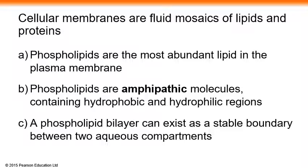Cellular membranes are fluid mosaics of lipids and proteins. Phospholipids are the most abundant lipids in the plasma membrane, and the structure of phospholipids was already discussed in a previous chapter. Phospholipids are amphipathic molecules — 'amphi' means two-way — so one side is hydrophilic and the other side is hydrophobic. Amphipathic means containing both hydrophobic and hydrophilic regions. A phospholipid bilayer can exist as a stable boundary between two aqueous compartments.